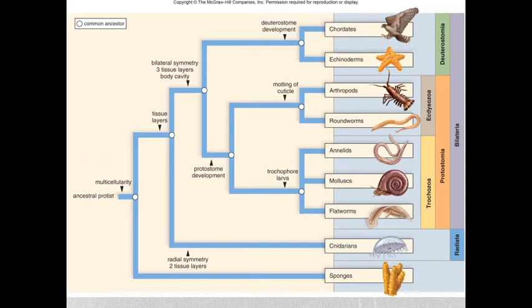To give you a little bit of perspective about the organisms we'll be talking about today: we left off talking about the sponges, organisms that are very much similar to the colonial choanoflagellates. We see tissue layers developed. At first, organisms are diploblastic, so they only have two tissue layers, and they are radially symmetrical, including the cnidarians, the jellyfish that we saw.